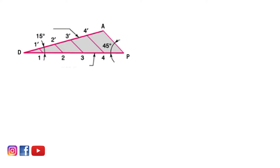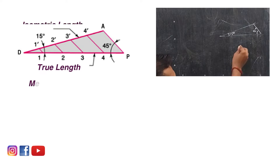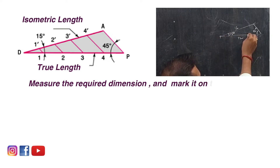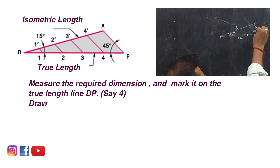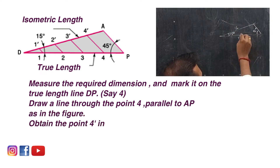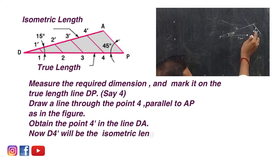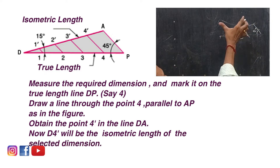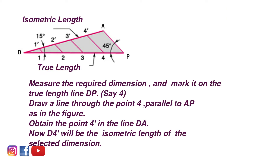Take the maximum dimension that will come in your sketch and use that value horizontally as DP, then construct the isometric scale as explained in the isometric scale diagram. Now you can obtain the isometric value of any dimension within your diagram, because you have taken the maximum dimension of your sketch as the baseline DP or the true length line. You can see now DP as the original length or true length, and DA is the corresponding isometric length. Measure the required dimension and mark it on the true length line DP. Assume that point is 4. Through 4, draw a line parallel to PA to obtain point 4-dash on the isometric length line.